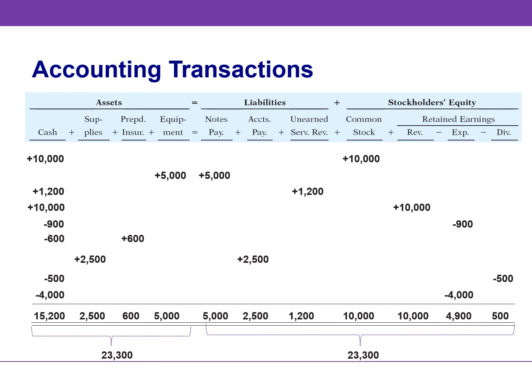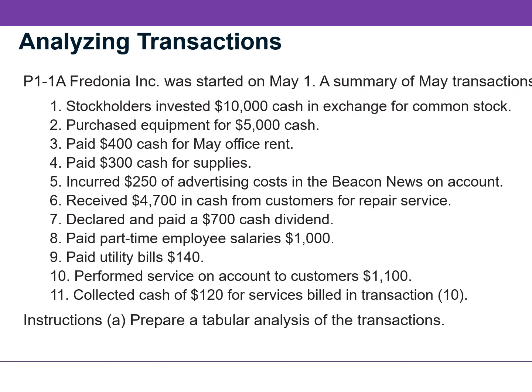We need to total each column to summarize the transactions for the month of October and show their cumulative effect on the basic accounting equation. Assets total $23,300, and liabilities and stockholders' equity total the same amount. Now it's your turn to analyze transactions — please open the Excel file and complete this learning exercise.